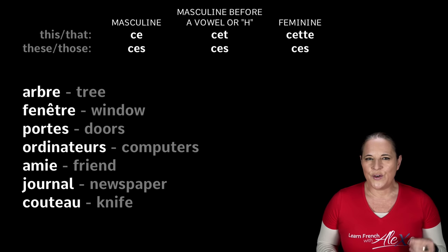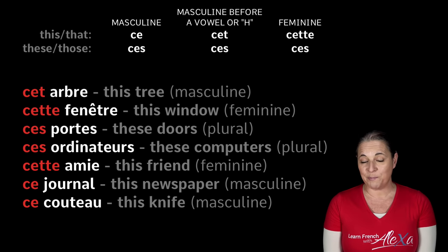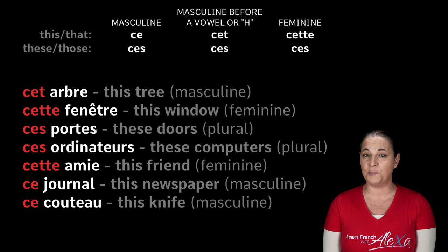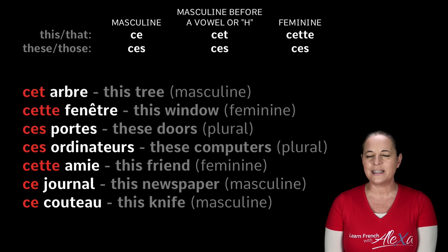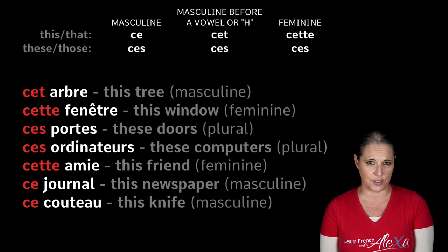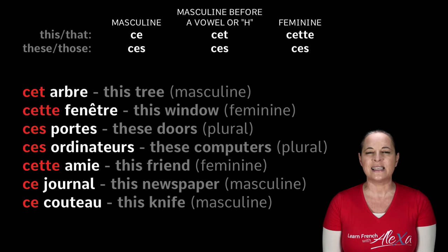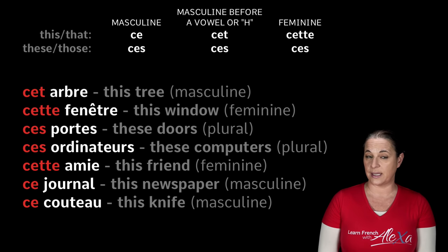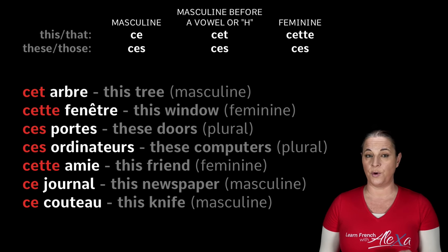Okay, let's have a look at the answers. Arbre — believe it or not, is a masculine word. But it also begins with a vowel. So the demonstrative adjective we use for this tree is cet, C-E-T: cet arbre. We can't say ce arbre, even though the word is masculine — it doesn't sound as good.